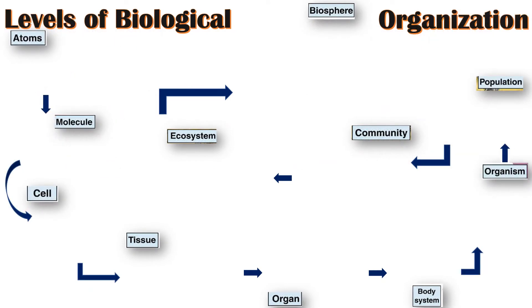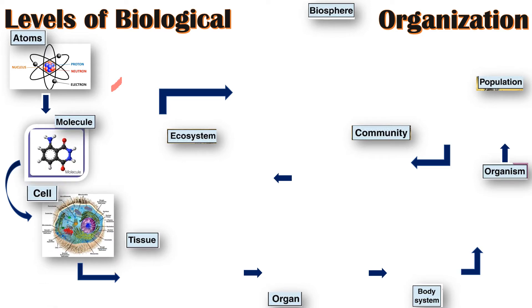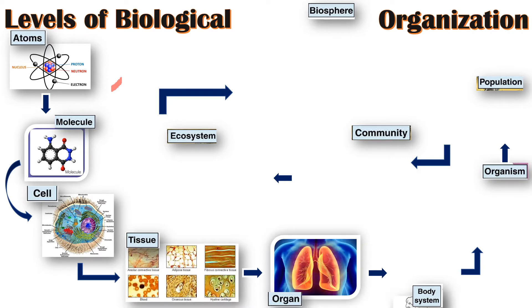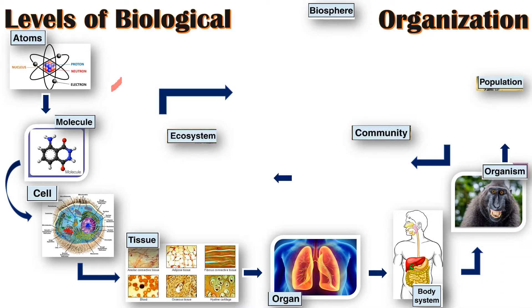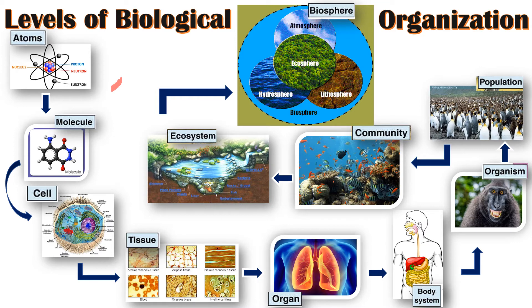Here we have a diagram of the levels of biological organization. First we have atom, then molecule, then cell, then tissues, organs, body systems, organisms, populations, community, ecosystem, and finally the biosphere. Take note: the levels of biological organization always start from the simplest form, which is the atom, and go up to the biosphere. This diagram will help you understand the difference between each level of organization in our ecosystems.